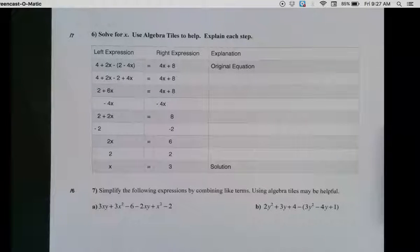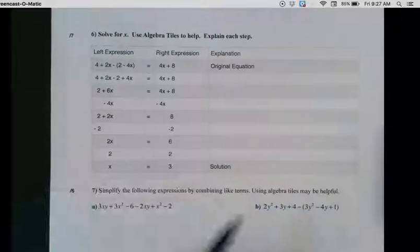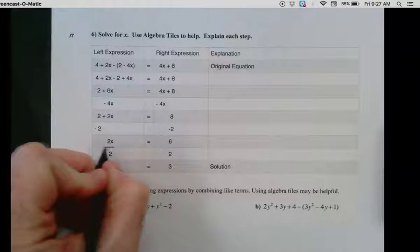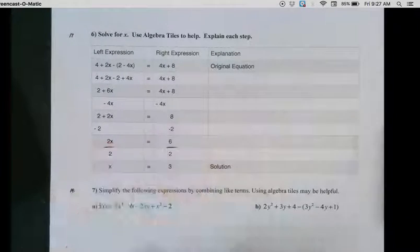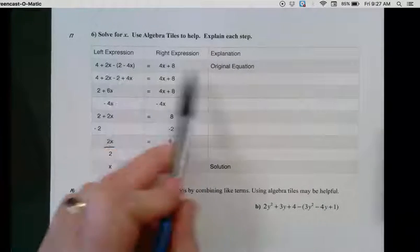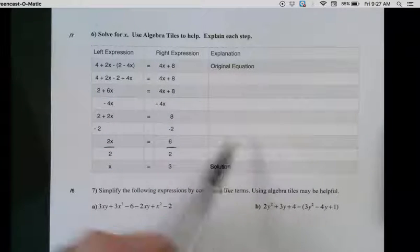We need to explain the steps that have occurred here. There's a division bar there. So here's the original equation. To go from this step to this step, what has occurred?